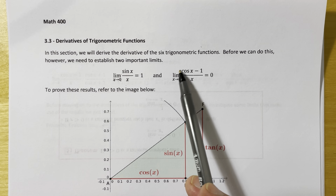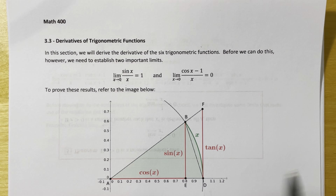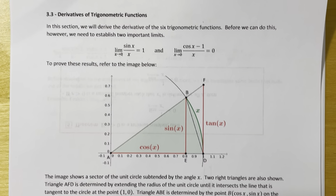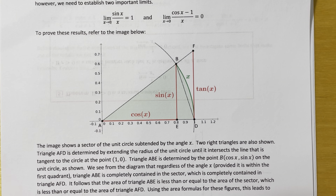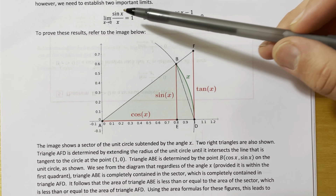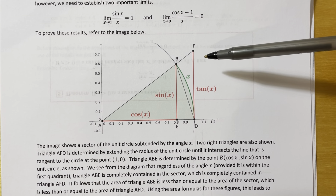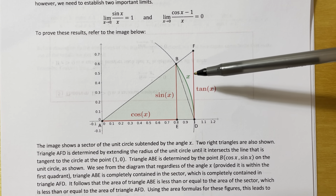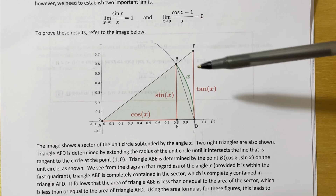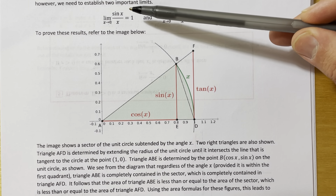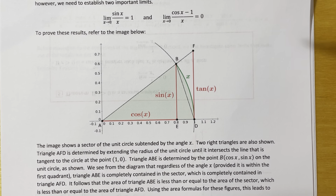Our goal is to actually prove both of these limits. In doing so, for the first time we're going to make a geometric argument for a limit. This is necessary because we define both the sine and cosine functions in trigonometry using the unit circle, so the unit circle naturally shows up in the process of proving either of these.